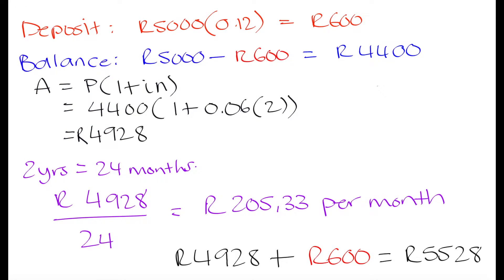In the last lesson we talked about hire purchase agreements. A hire purchase is essentially like paying for an item in monthly installments. You have to pay a certain amount of money up front — usually a fraction of the cost of the item — and the rest of the money owed is paid over a period of time in monthly installments.